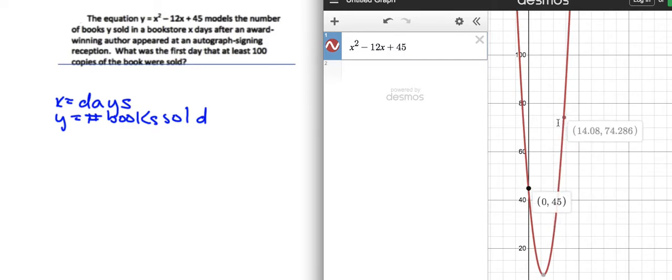So, you'd go up here, where you got a hundred copies, and so it looks like after day fifteen. So, it's like day fifteen and a half. So, what was the first day that at least a hundred copies were sold? That would be probably on, I would go ahead and say it was like day fifteen, because it was halfway through day fifteen. So, that would be day fifteen.